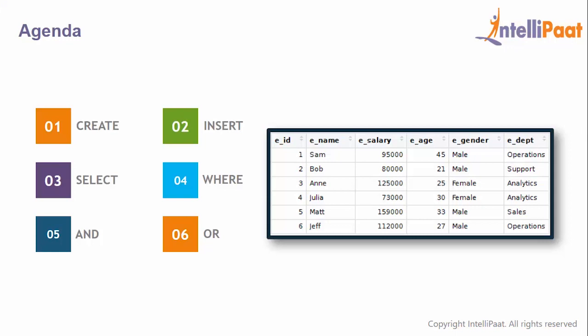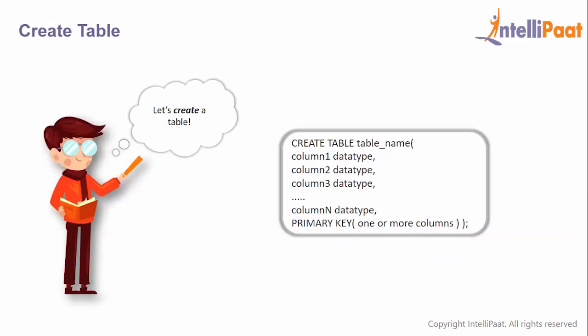We'll start off by creating an employee table which will comprise of employee ID, employee name, salary, age, gender, and the department in which the employee works. After that we'll insert some records into this table, fetch records with a SELECT statement, use the WHERE clause to impose a condition while fetching records, and finally use AND and OR operators to impose multiple conditions.